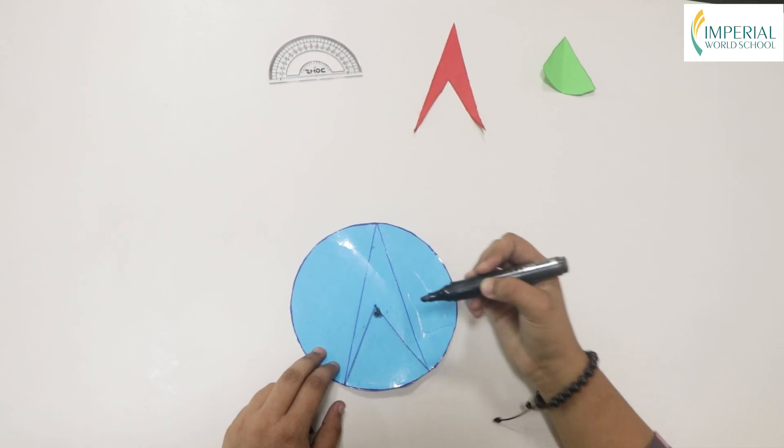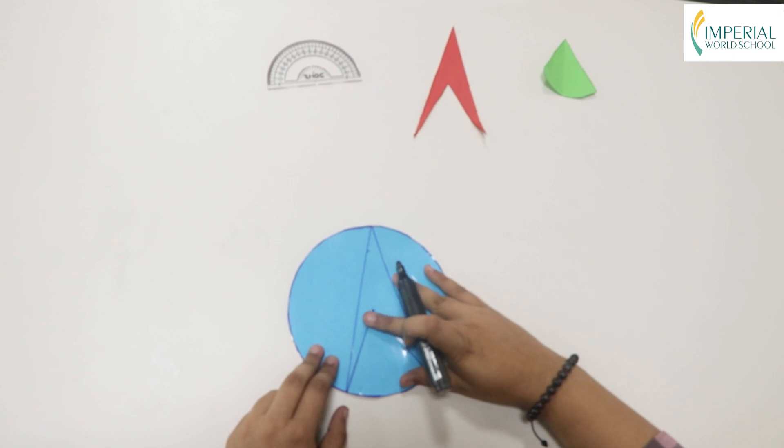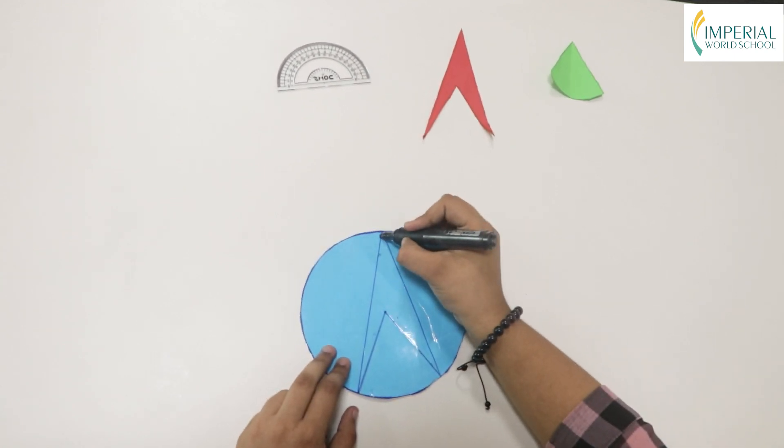...over here is the central angle, as it is formed at the center of the circle.